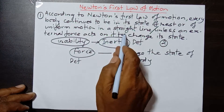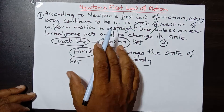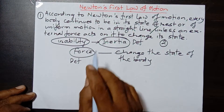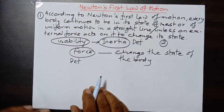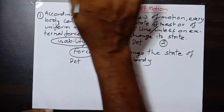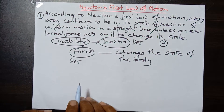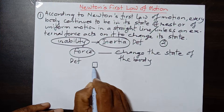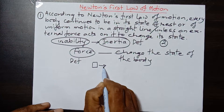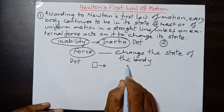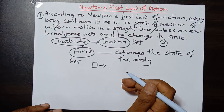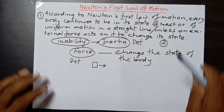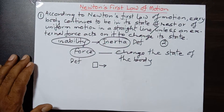Inertia is the property of the body due to which it resists the change in its state of rest or uniform motion in a straight line. Inertia is that property of the body which resists the change of its state. If a body is at rest, it tends to continue its state of rest, and if a body is in motion, it tends to continue its state of motion.